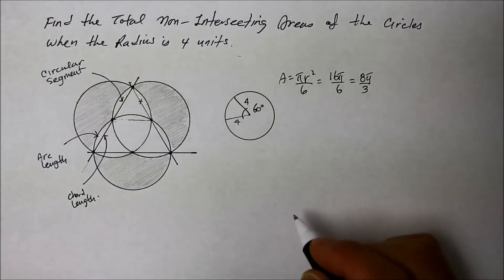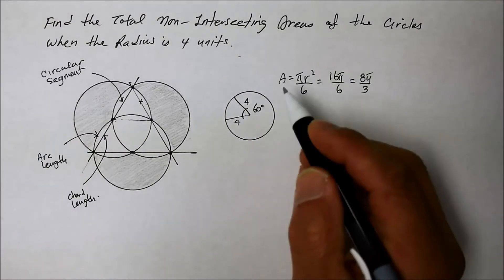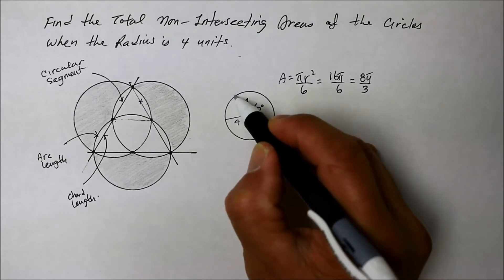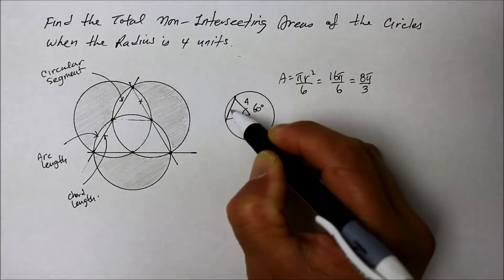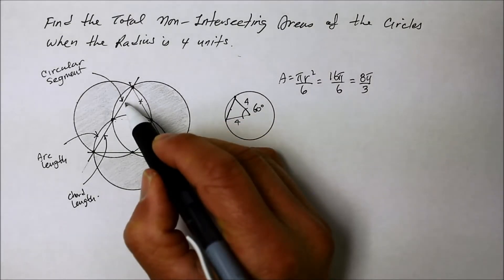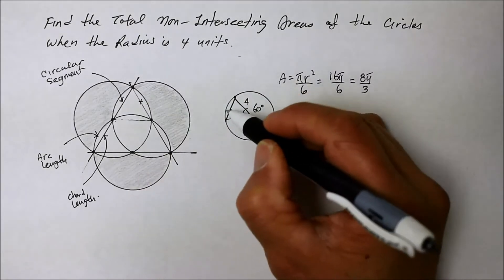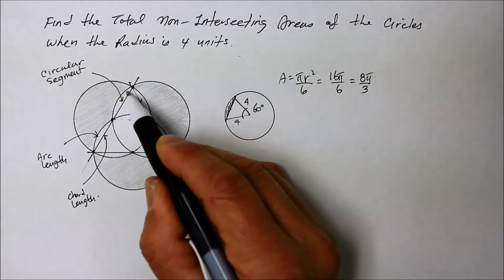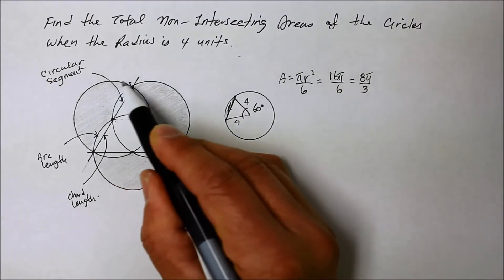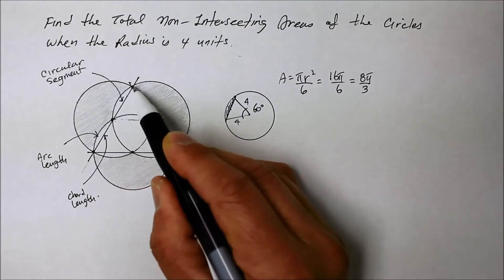Now check this out. See that right there? We're going to make that into our equilateral triangle. And that right there is that circular segment. That little shaded area is a circular segment right there, which we need to take away from the semicircle of this one shaded region. Are you confused yet?